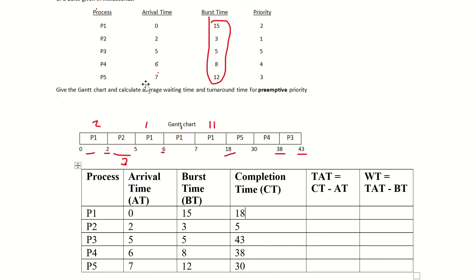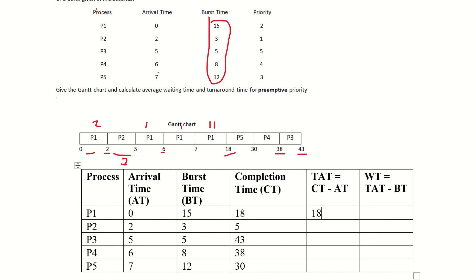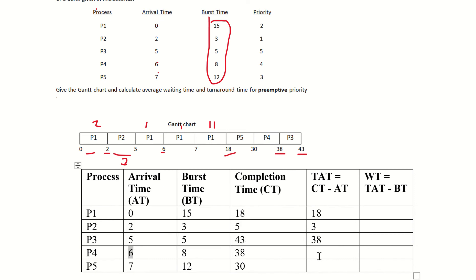So the completion time of P1 is 18 and arrival time is 0, so 18 minus 0 equals 18. Completion time of P2 is 5, arrival time is 2, so 5 minus 2 equals 3. Completion time of P3 is 43, arrival time is 5, so 43 minus 5 equals 38. Completion time of P4 is 38, arrival time is 6, so 38 minus 6 equals 32.